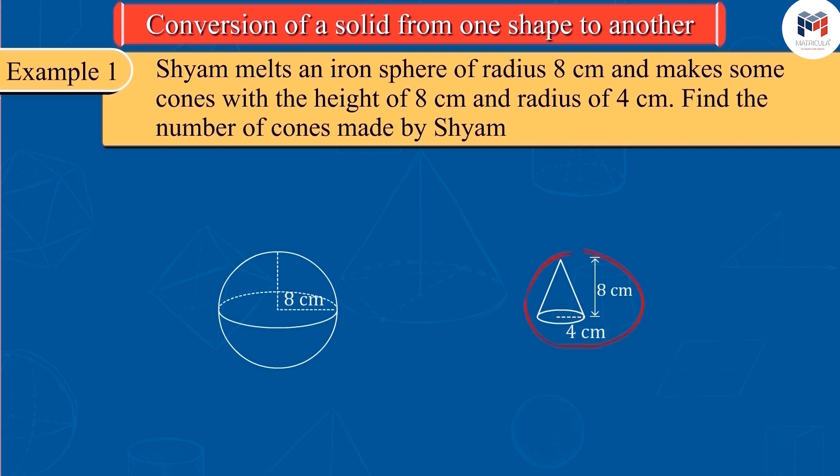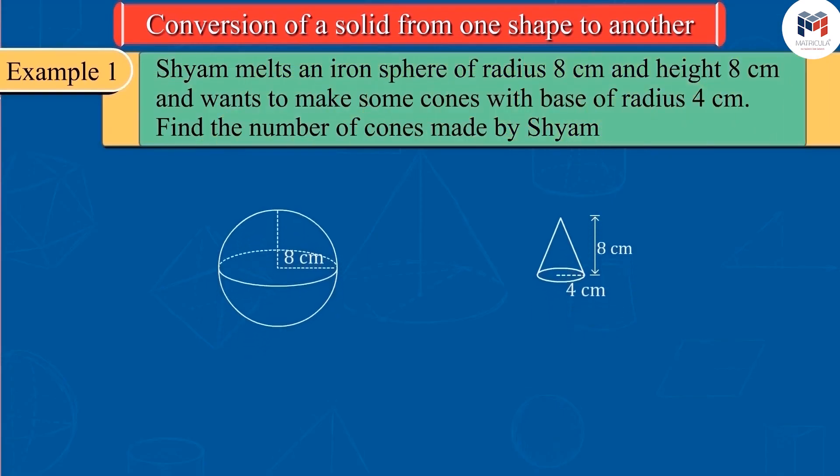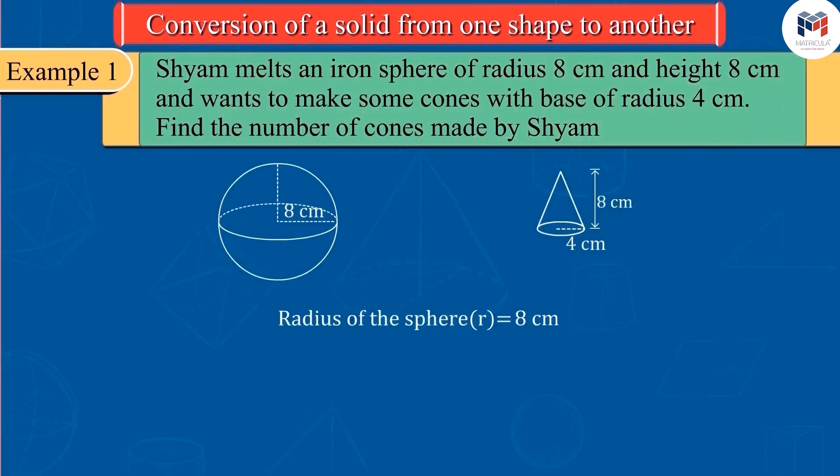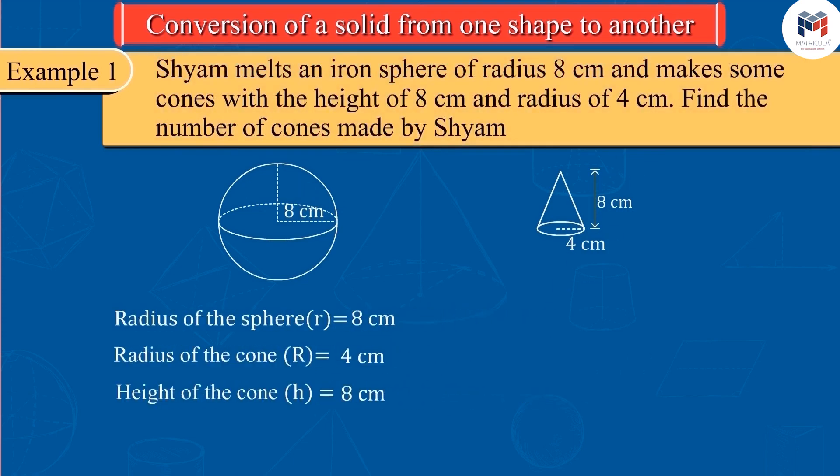Find the number of cones made by Shyam. Pause the video and try yourself, then match your answer. From the question, let us consider r as the radius of the sphere and let R be the radius of the new cones formed, height is h. So now, can you calculate the number of cones made by Shyam?